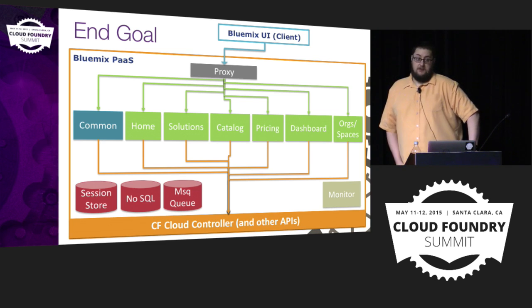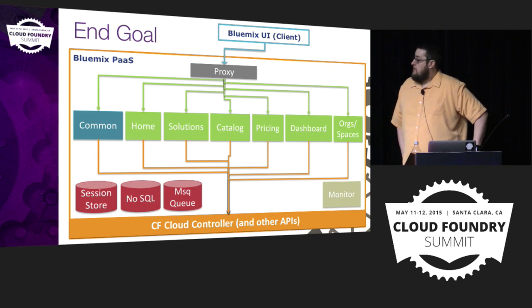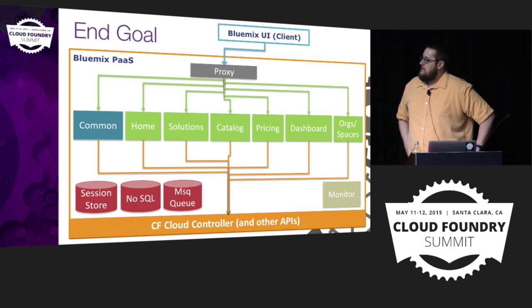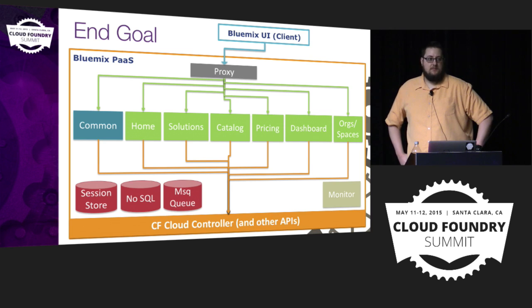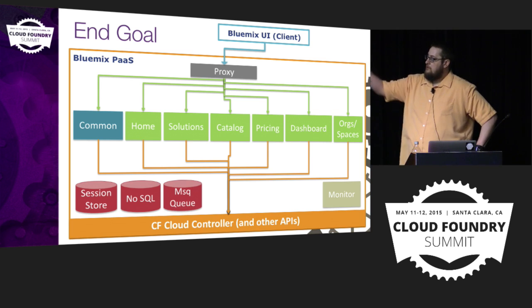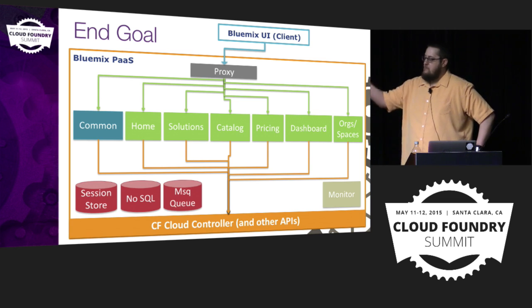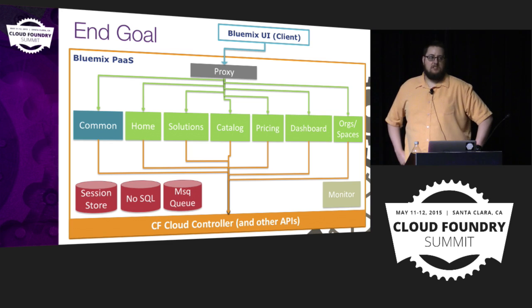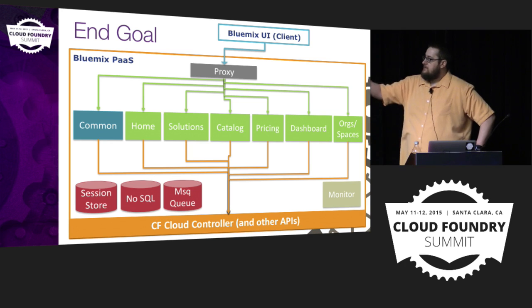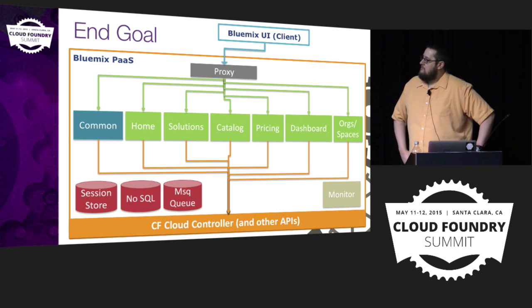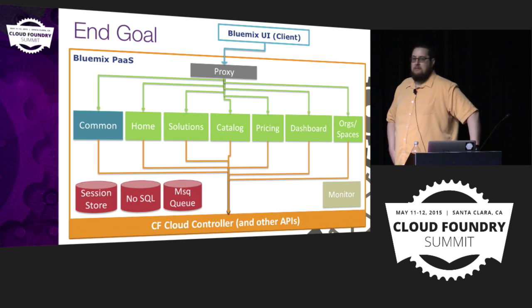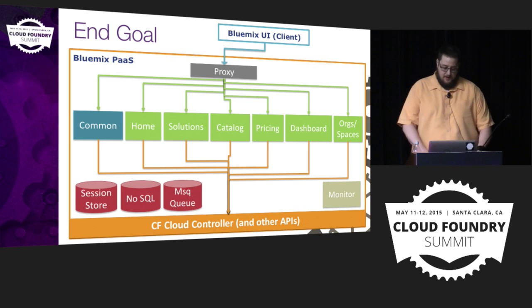This is where we want to get to, of course. We want to eliminate the Java monolith — in this picture it has been eliminated — and we've added dashboard, pricing, orgs and spaces, and catalog down below the proxy. This is still going to take us some time, but it's the direction we're headed.